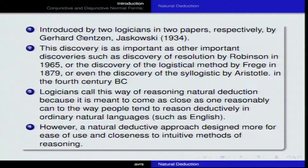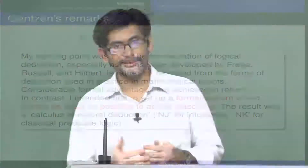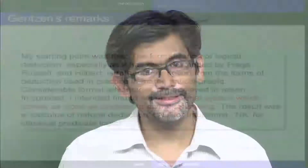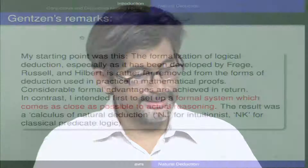The founder himself, Gerhard Gentzen, remarks: 'My starting point was this — the formulation of logical deduction, especially as developed by Frege, Russell, and Hilbert, is rather far removed from the forms of deduction used in practice in mathematical proofs.' We will see a little later about some proofs in axiomatic systems, and you yourself will note how difficult it is to prove simple theorems such as P→P or the law of excluded middle P∨¬P. These things become simpler in the natural deduction method.